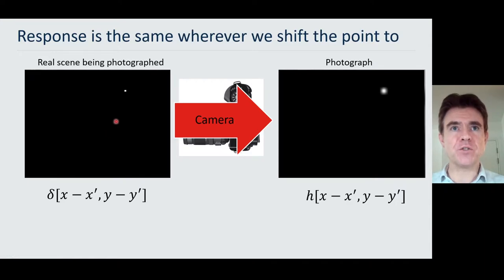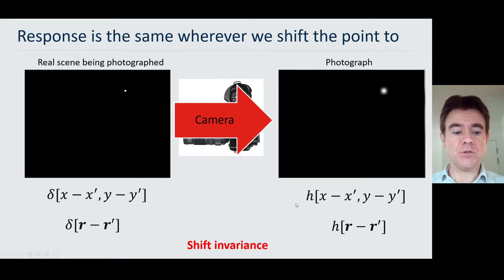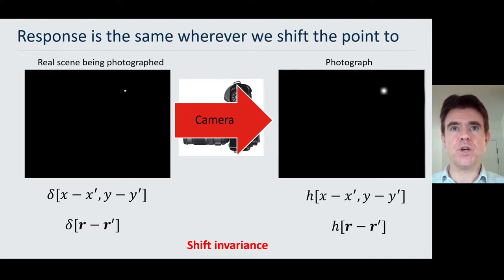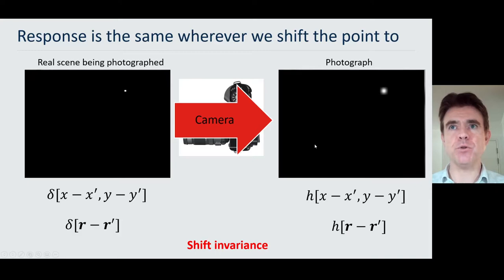If that star had been differently positioned — displaced to position x', y' — then correspondingly the response function in the output photograph would also be shifted to that corresponding position. This illustrates shift invariance in convolution: wherever the point source is in the input, the functional form of the response is identical — the same size and shape — just positioned at the location corresponding to the delta function in the input. Shift invariance is really core to convolution.